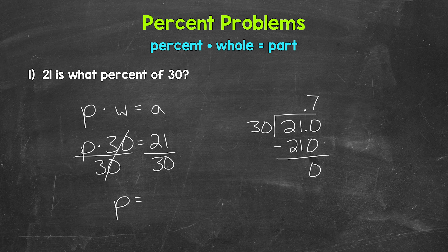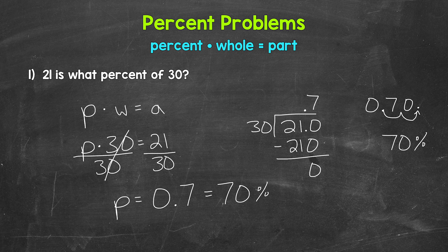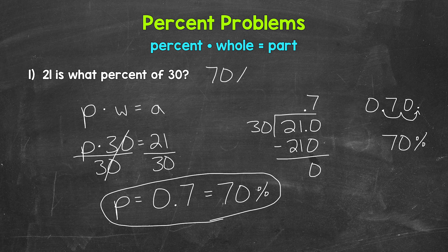That answer is in decimal form, but we're looking for a percent. To convert a decimal to a percent, multiply by 100 — a quick way to do that is to move the decimal twice to the right. For 0.7, we move the decimal once, twice to the right and fill the gap with a 0. So 0.7 equals 70%. P equals 0.7, which equals 70%. So 21 is 70% of 30.